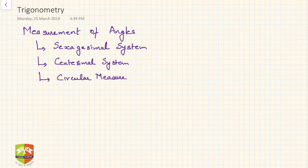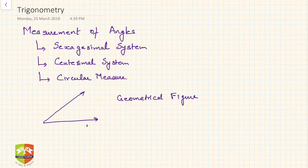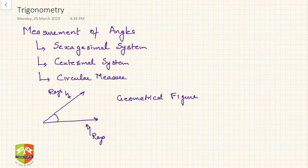Welcome to this session on trigonometry. We are going to start with measurement of angles. First, we need to know what an angle is. An angle is a geometrical figure in a plane, and it is bounded by two rays. This particular measure is called an angle.